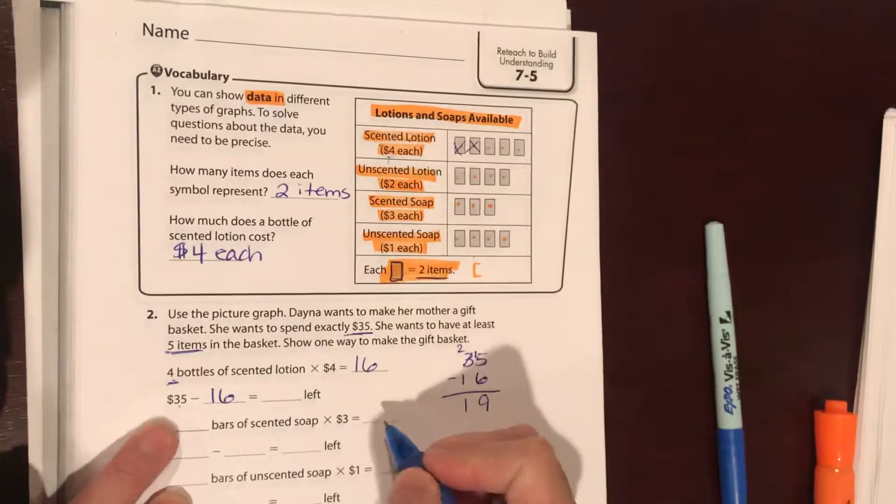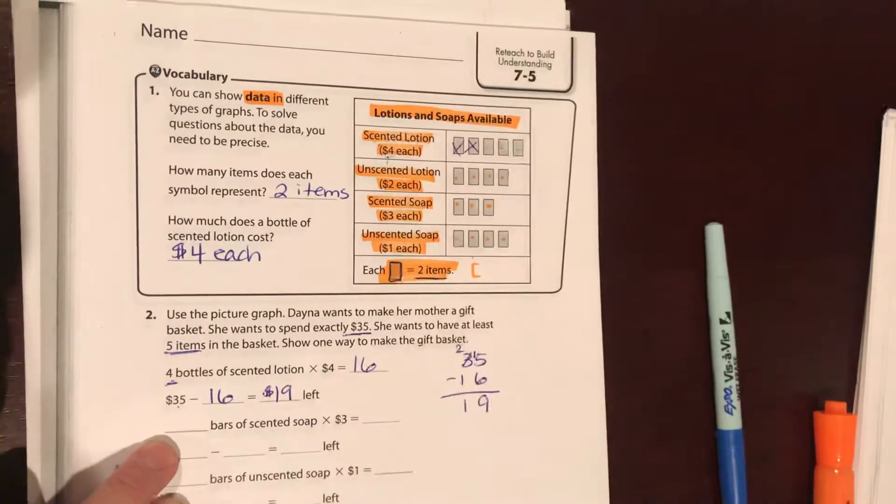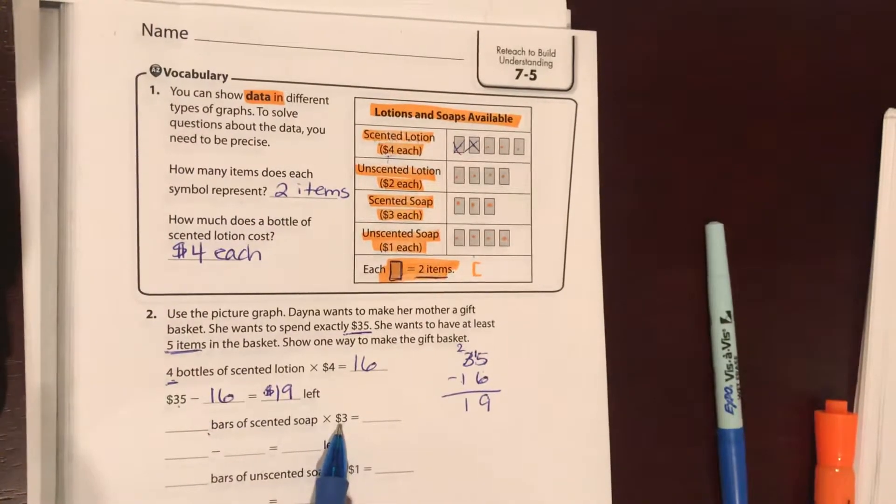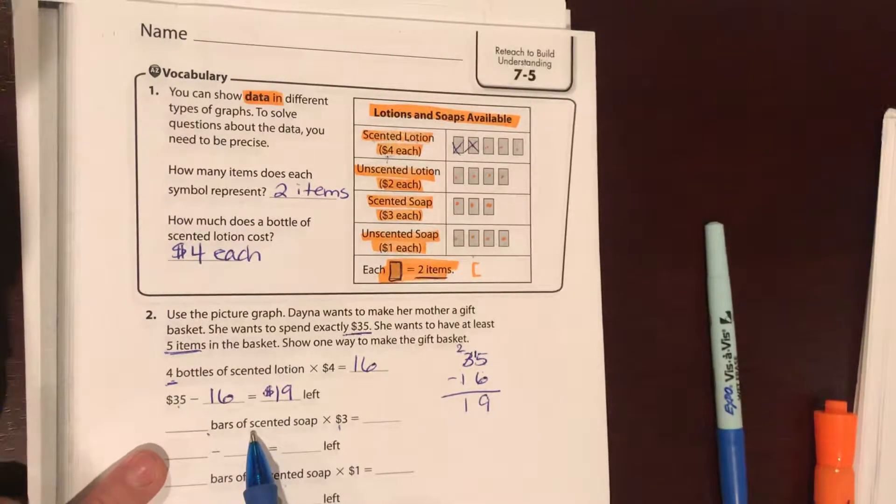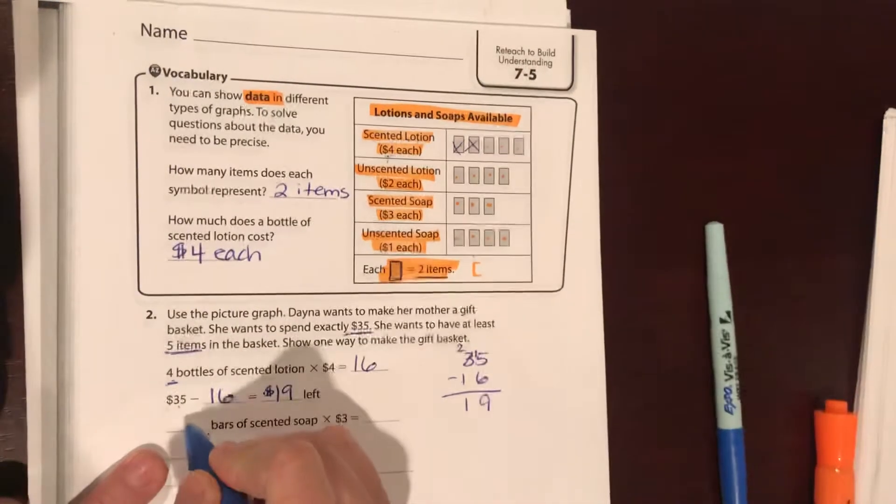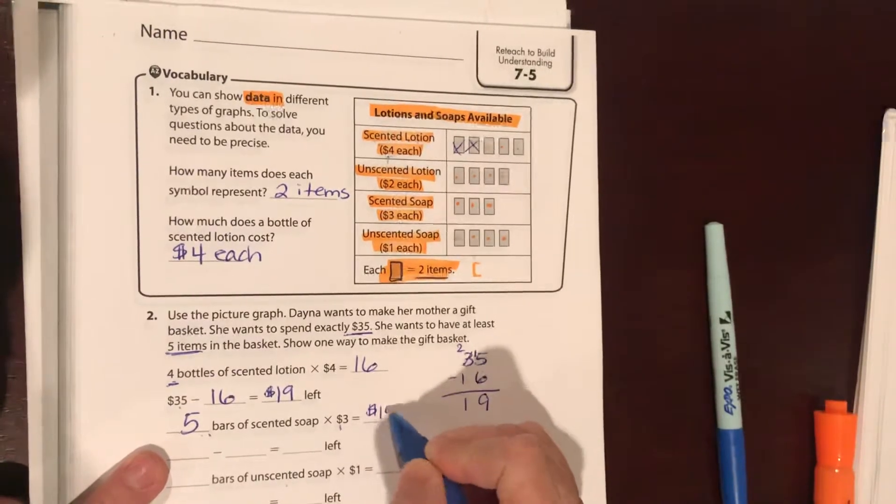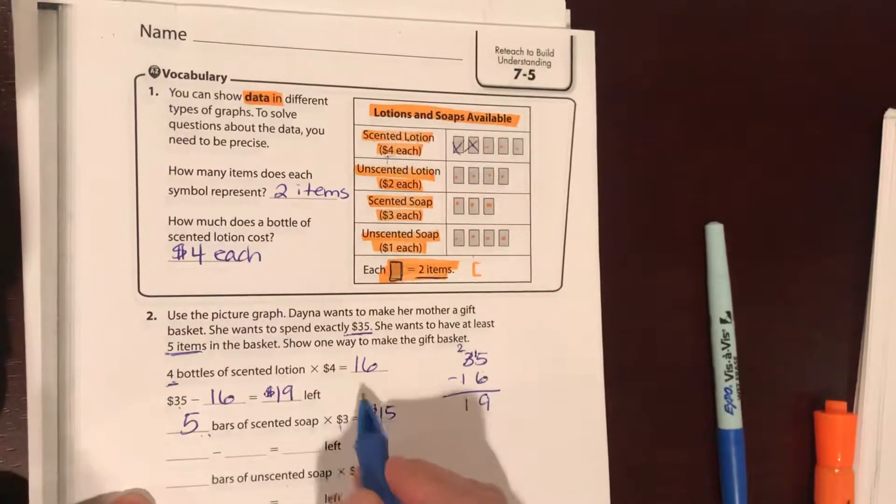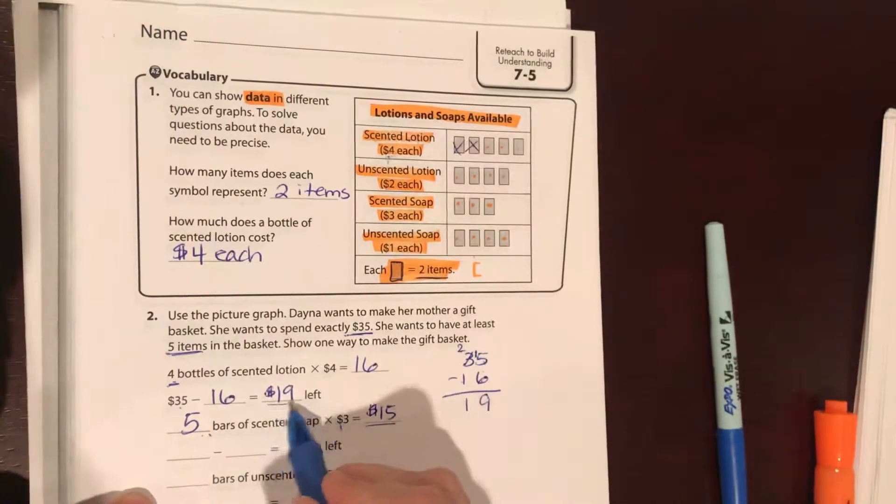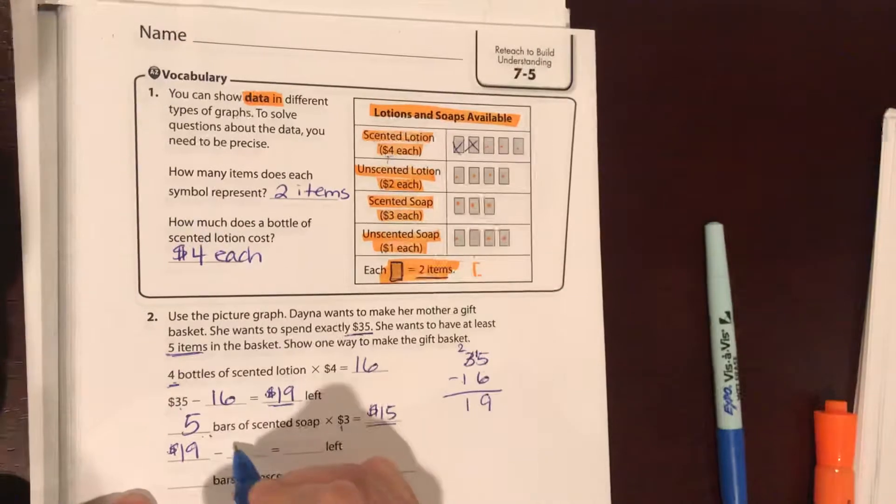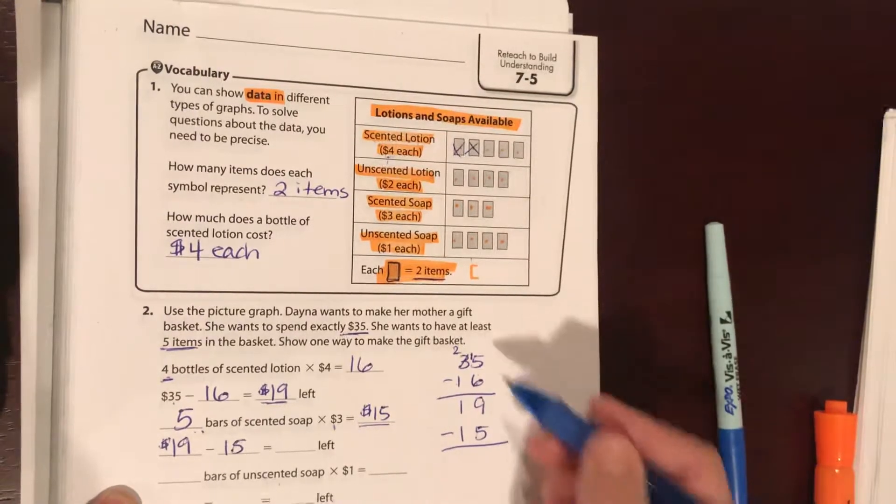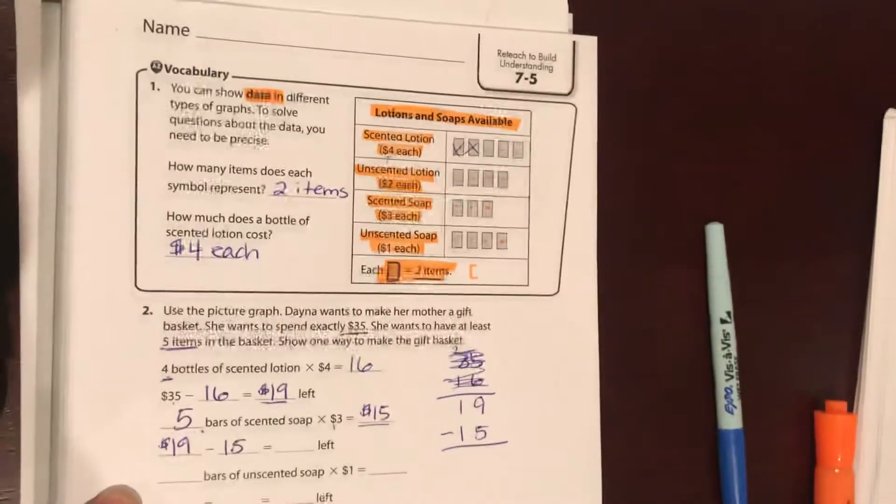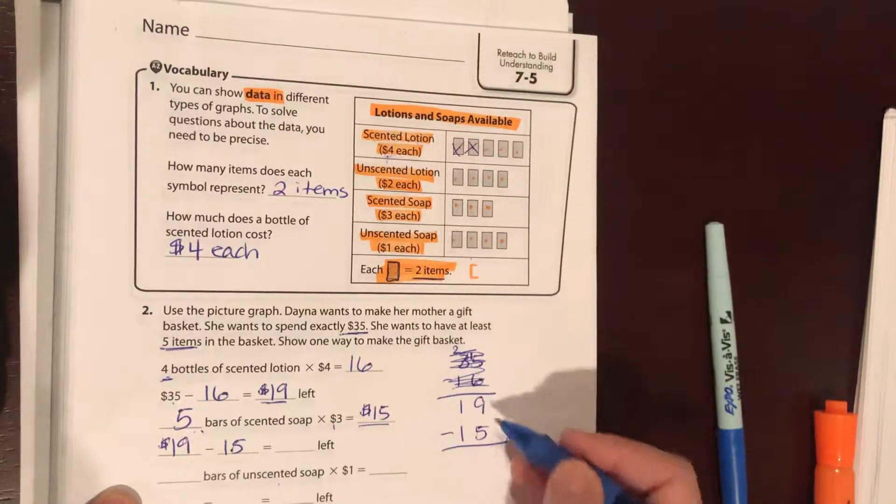How many bars of scented soap do we want to buy? Because we want to put some unscented soap in there too. They're three dollars each, we have nineteen dollars to spend, so we could do five bars, five times three, that's fifteen dollars. So we started out with nineteen and we're going to subtract out the fifteen. More on the top, no need to stop.